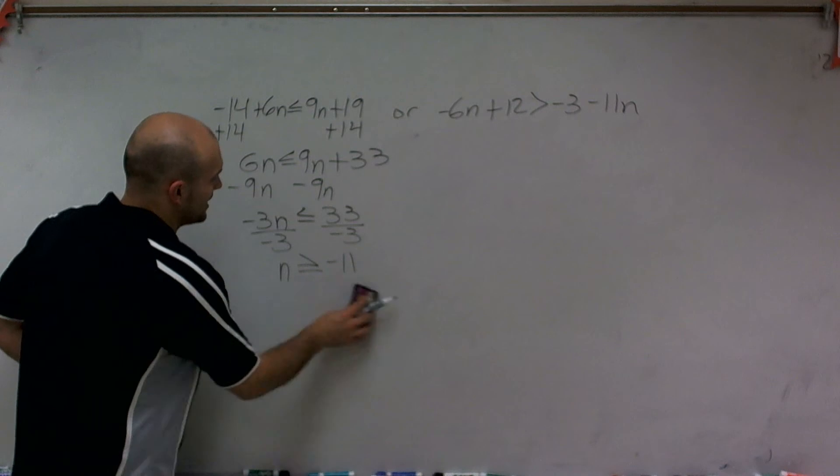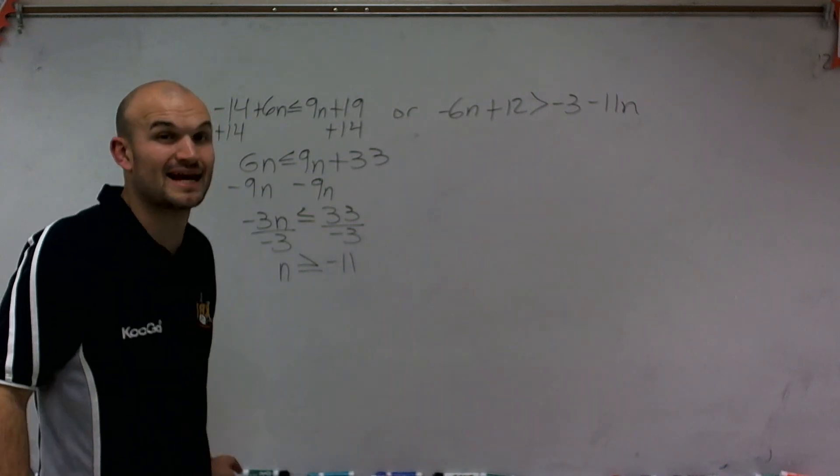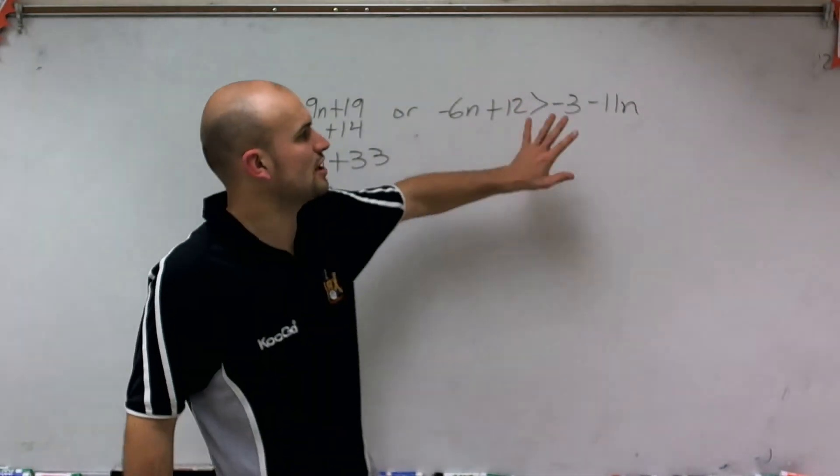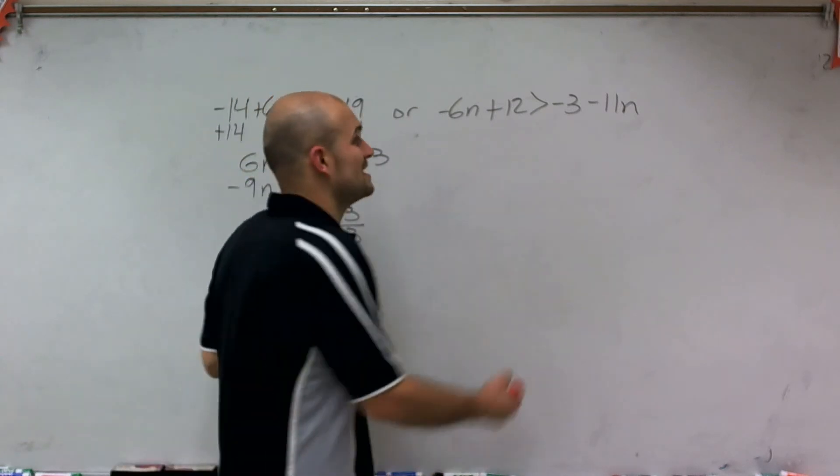All right. So now let's go. So we have a value here. n has to be greater or equal to negative 11. Now let's go and solve this. And I'm going to do the same thing. I'm just going to solve for our variable on the left side.